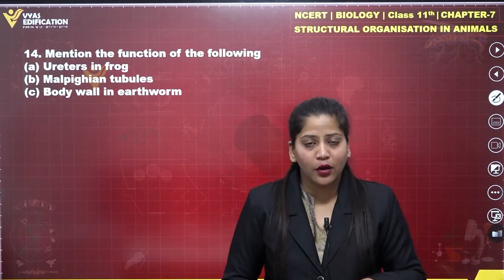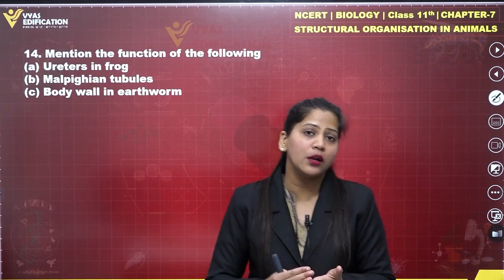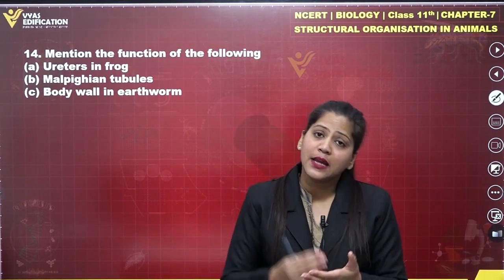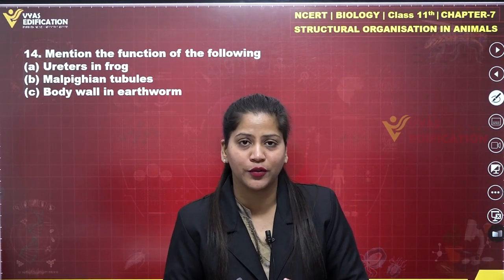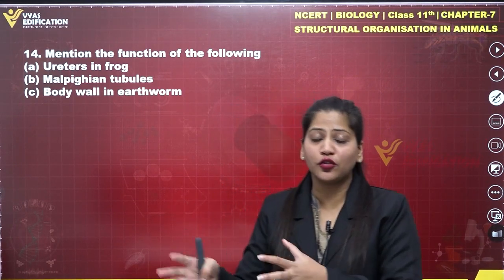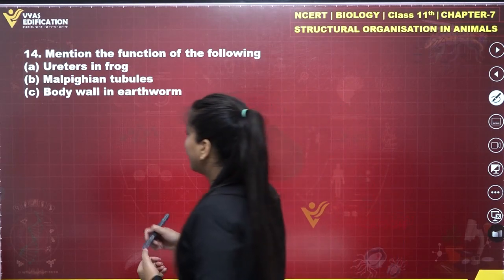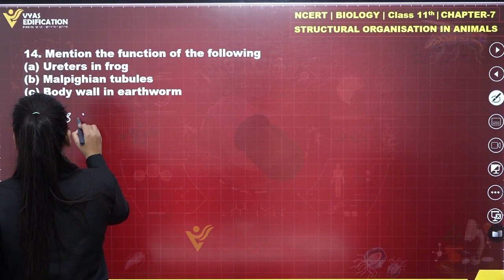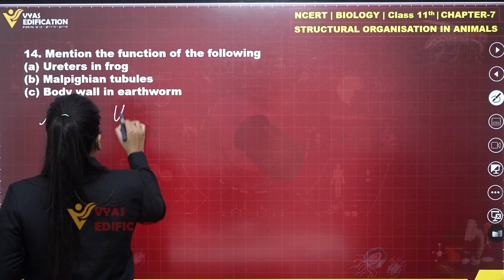Moving on to the last part of this question, that is the function of the body wall in earthworm. The body wall in earthworm consists of muscle layers. It helps in movement and locomotion. This is the function of the body wall in earthworms.